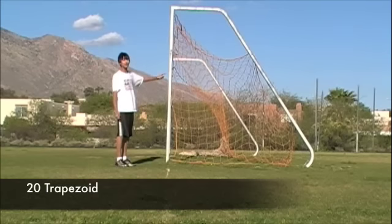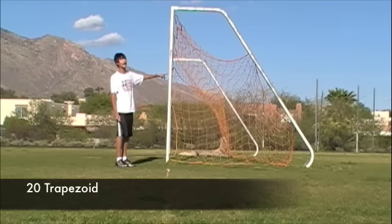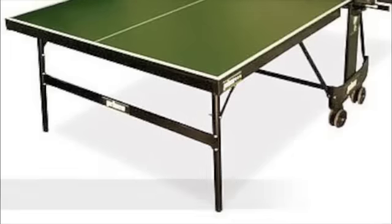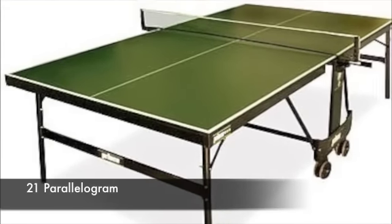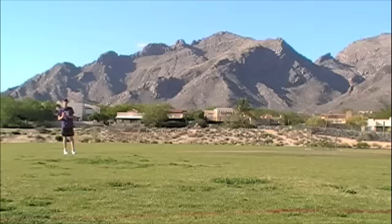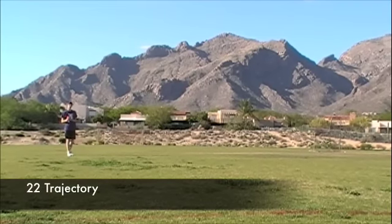The side of the soccer goal is shaped like a trapezoid. The surface of this ping pong table is in the shape of a parallelogram. When I throw this ball, it flies with trajectory.